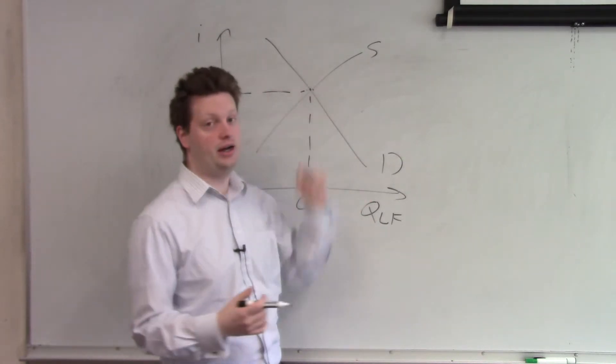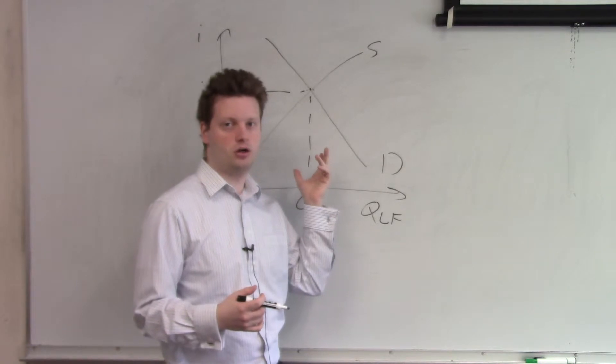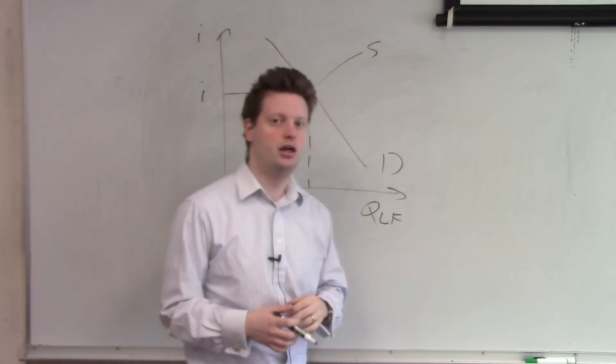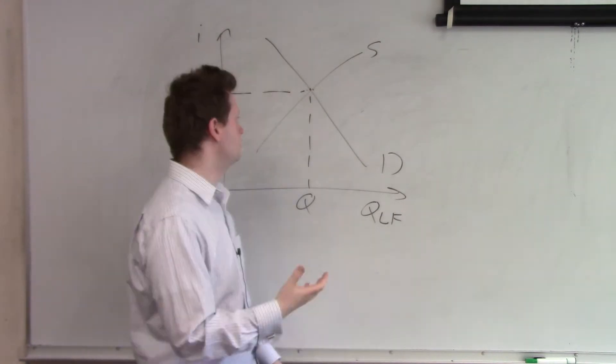And that will cause supply to shift because, again, this is the private market, not the public. This brings us to the second curve, which is demand. So what is demand?